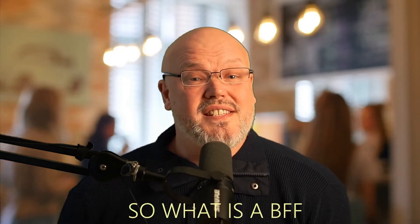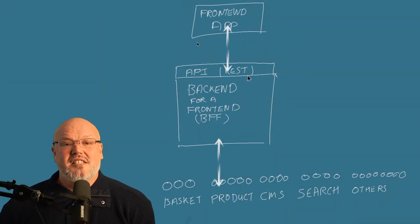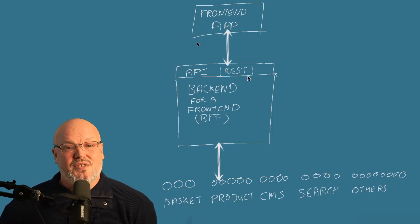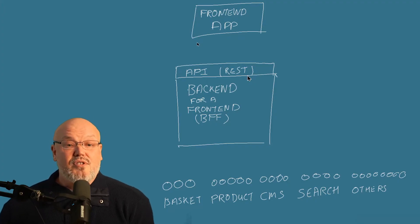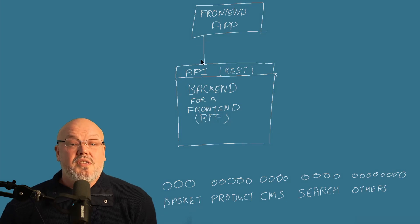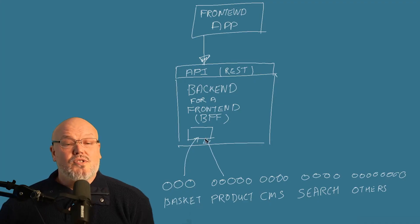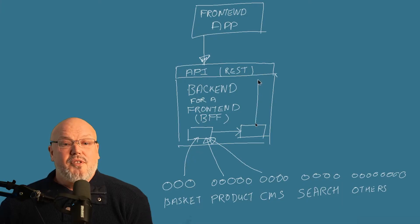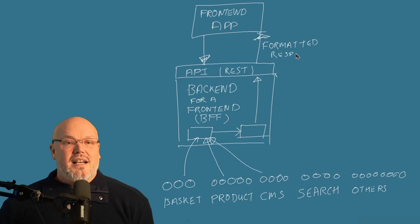What is a backend for a frontend and how does it help? Simply put, it is a custom API that sits between the backend microservices APIs and the frontend application. Instead of the frontend application being responsible for calling all the microservices and processing the results, it makes a single call to the BFF — its own custom backend API — which in turn calls the relevant microservices. It would then structure and format the responses from those microservices and finally deliver the response nicely formatted back to the frontend. As a result, it will reduce the complexity in the frontend.